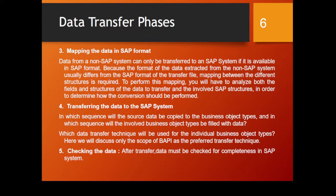In phase 4, we do transferring of data to the SAP system. After completing our SAP format file, we transfer data from this file to the SAP system. We must determine in which sequence data will be copied to the business object type, in which sequence the involved business object types will be filled, and which data transfer technique will be used for each individual business object type. Here we discuss only the scope of BAPI as the preferred transfer technique.